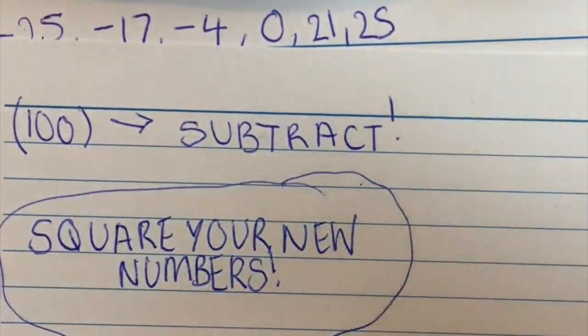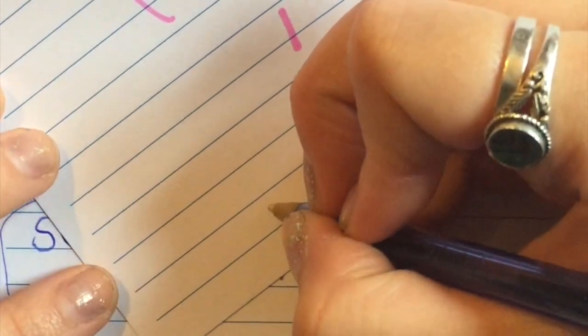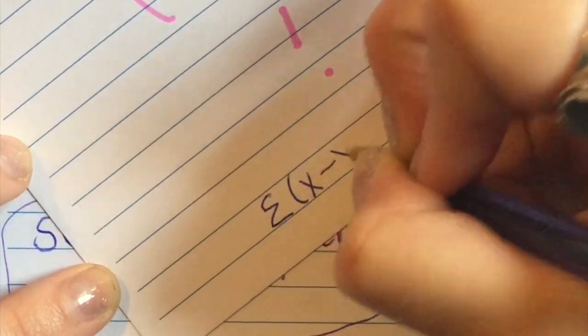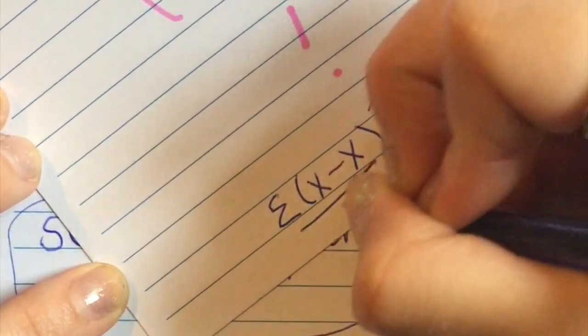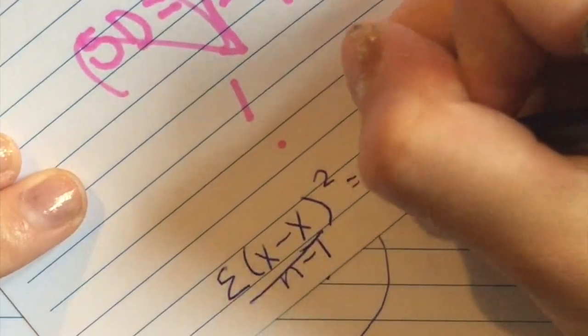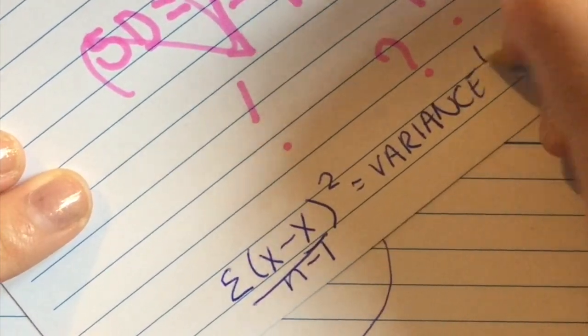If we go back to the formula, you can see how it all comes together. You had the sum of x minus the mean, squared, over n minus 1 — that's what you were working out for each number individually — and that gives you your variance. The missing step is being able to square root that sum of squared differences, which is all you need to go from variance to standard deviation.